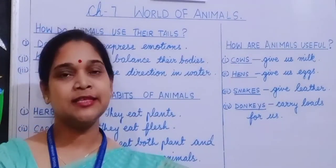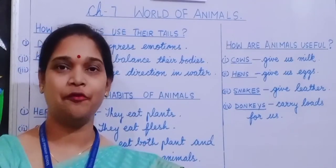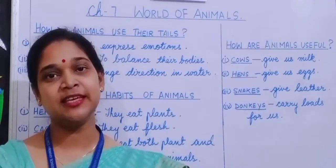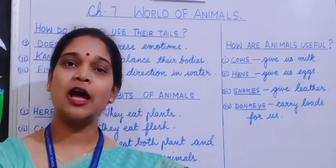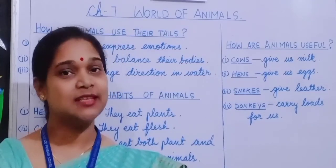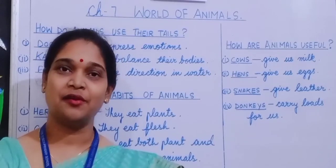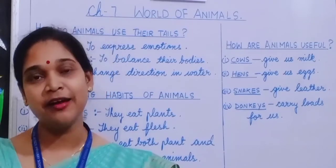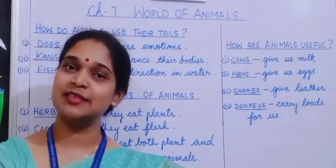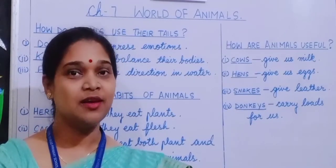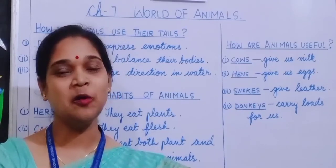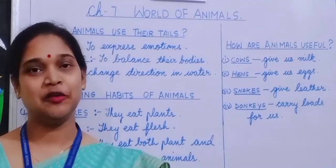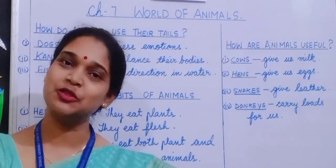Now children, let's have a quick look at what we have read today. We read about pet animals and domestic animals. We also saw how animals differ in sizes and shapes. We read about their feeding habits — how some are herbivores, some are carnivores, some are omnivores, and some are scavengers. We read how animals use their tails and how they are useful to us. For better understanding of the text, please read your lesson twice. Thank you.